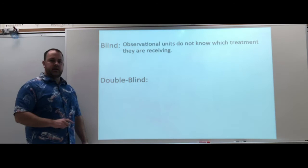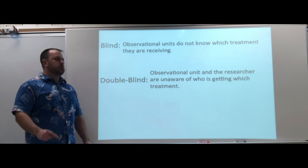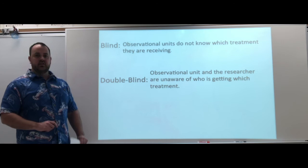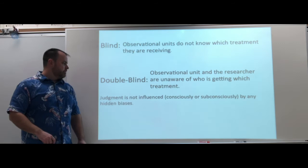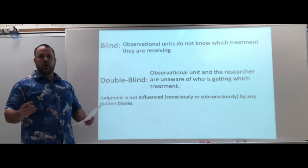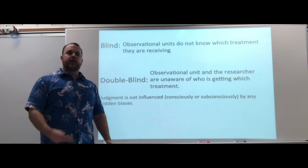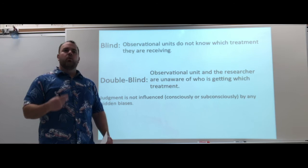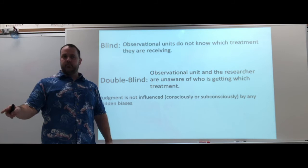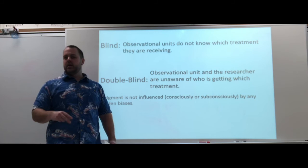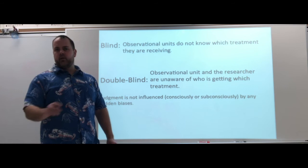A double-blind experiment is when both the observational units and the researchers are unaware of whose treatment is whose. The reason you do this is to control the outside factors of the person doing the evaluating — so their judgment is not influenced, consciously or subconsciously, by any hidden bias. For example, if they're looking at a pain medication and observing how a subject moves after taking it, you don't want the doctor knowing who took the pain medicine and who didn't, because then they might expect that person to start moving a little easier.